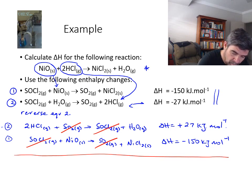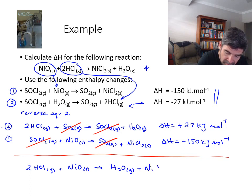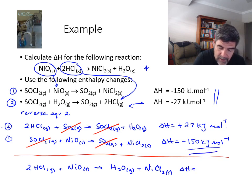What we end up with is an overall equation here which has 2 HCl gas plus NiO solid going to H2O gas plus NiCl2 solid, and a delta H value which is the sum of these, which when I add them up gives me minus 123 kilojoules per mole.